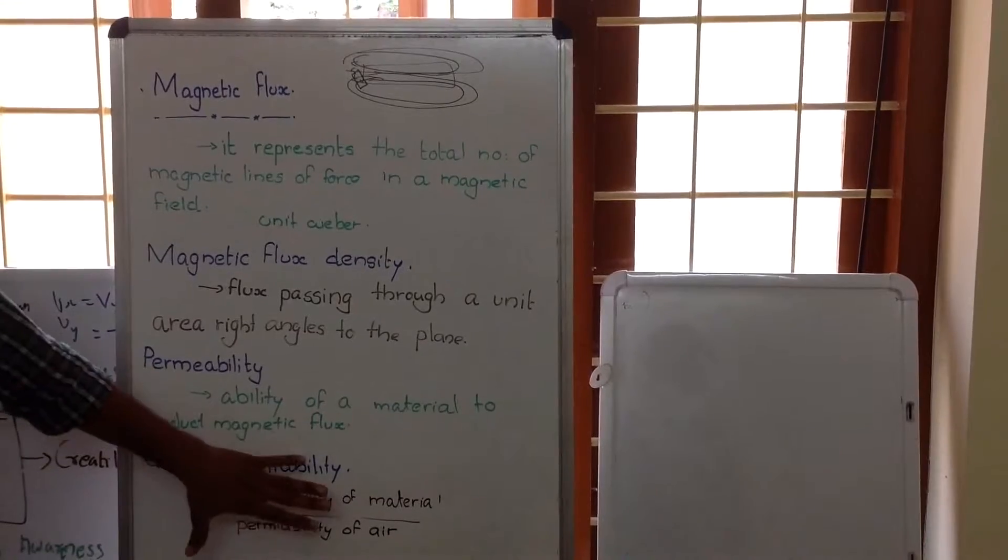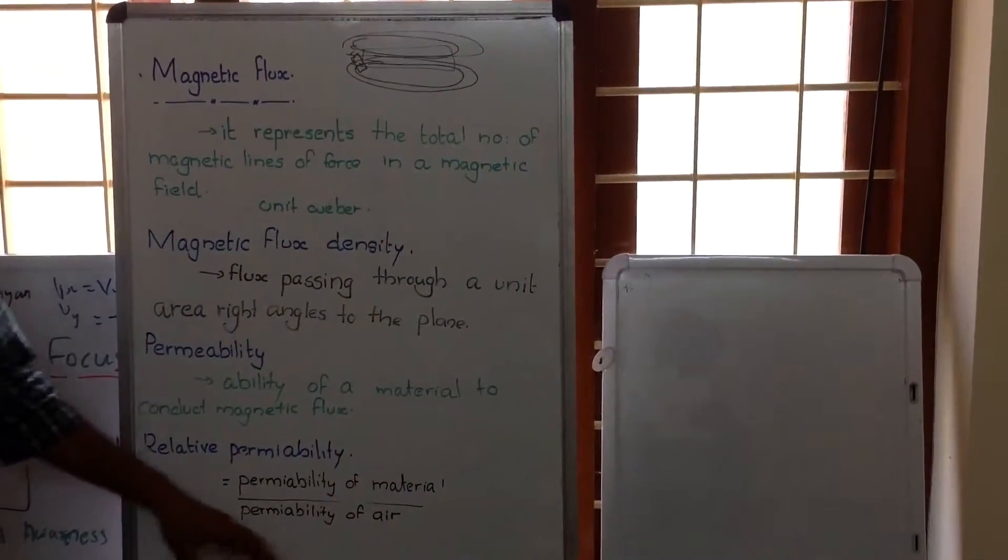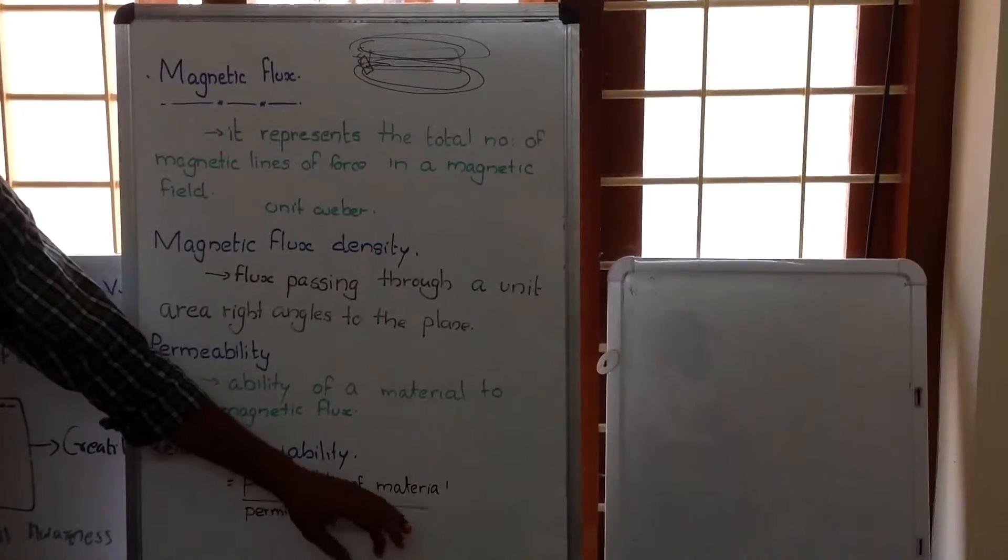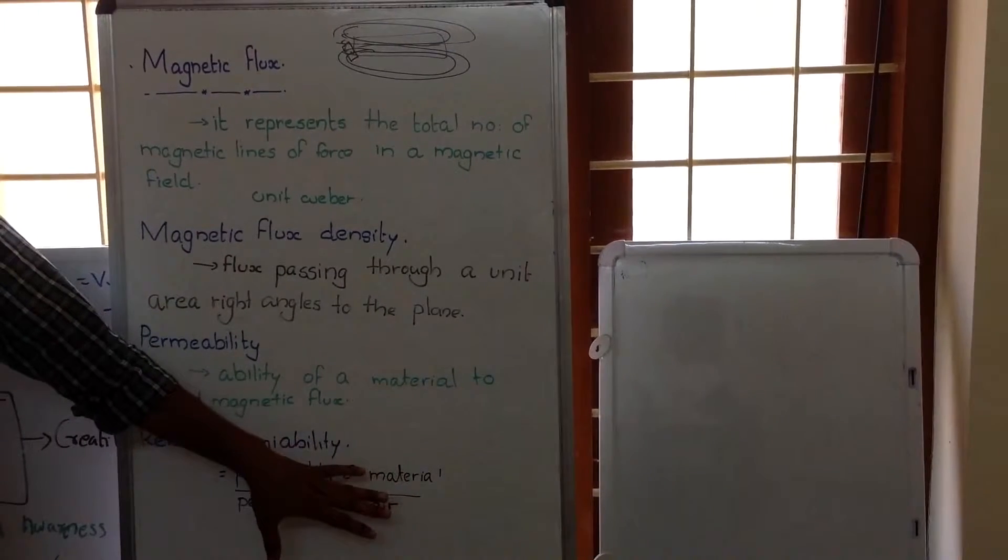Relative permeability is defined as the ratio of permeability of the material to the permeability of air. It can be studied similar to that of refractive index.